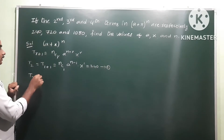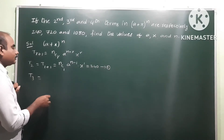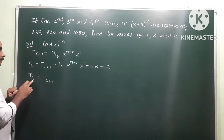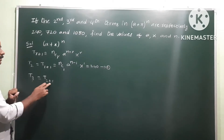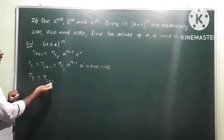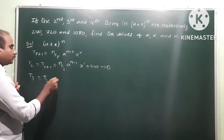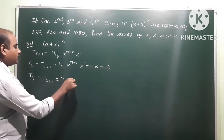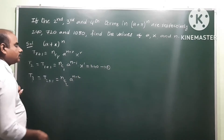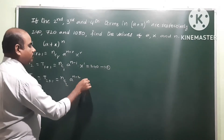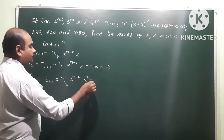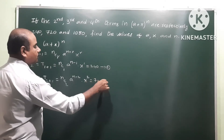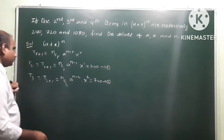The third term is T3, with r = 2. So nC2 · a^(n−2) · x^2 = 720. This is equation number 2.